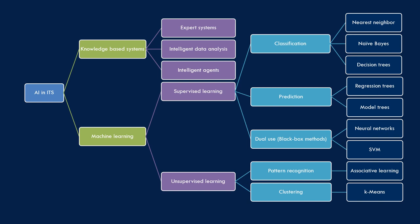The overall classification of artificial intelligence in ITS includes knowledge-based systems — more traditional than machine learning ones — such as expert systems, intelligent data analysis, and intelligent agents. More sophisticated methods include supervised learning with classification, prediction, and dual use, where black box methods apply. Unsupervised learning includes pattern recognition and clustering. Specific algorithm names for appropriate methods are shown in dark blue boxes.